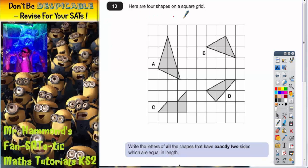Question 10. Here are four shapes on a square grid. Shape A, B, C and D.